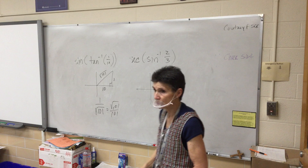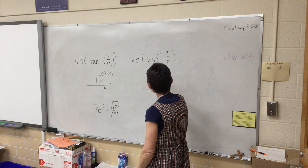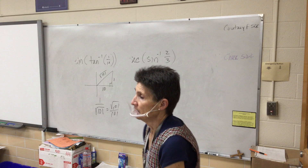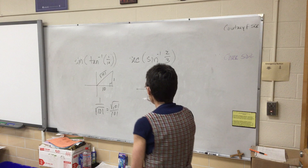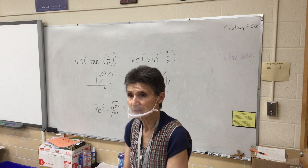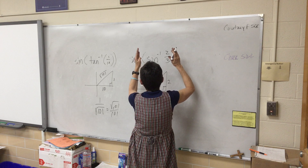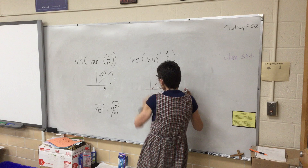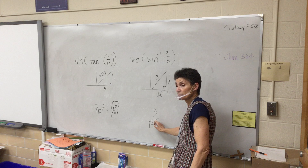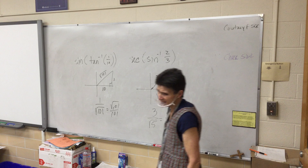For secant of inverse sine (2/3): drawn in quadrant 1. Sine is 2/3, so we find the missing side using the Pythagorean theorem — that's the square root of 5. Secant is hypotenuse over adjacent, so the answer is 3 over root 5, or 3 root 5 over 5.